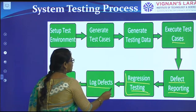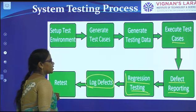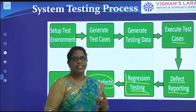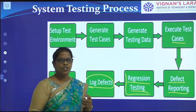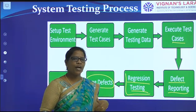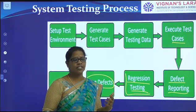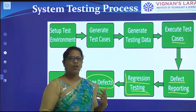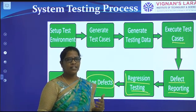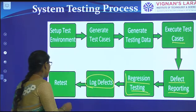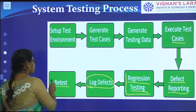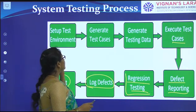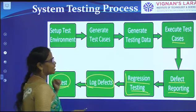After regression testing, again they have to check what defects are there — what type of log defects they are getting while entering into the system or software. They have to log those defects and again go for re-testing. So this is the process of system testing.